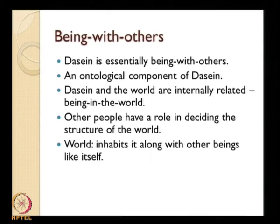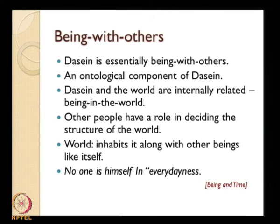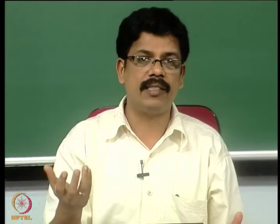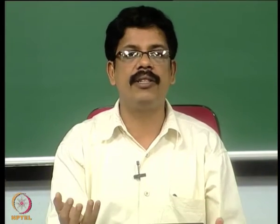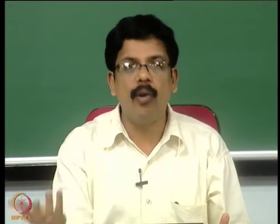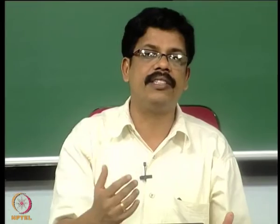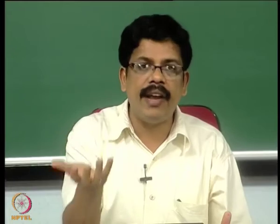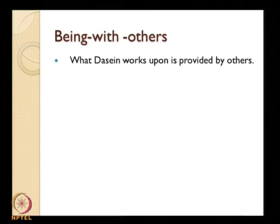Other people have a role in deciding the structure of the world, because my world is not something I myself created nor something given a priori; it is a world I too contribute to creating along with other people. There is a socio-political and cultural world where other people also participate. Heidegger says in Being and Time: 'No one is himself in everydayness,' because the world in which one finds oneself is not one's creation alone. What Dasein works upon is provided by others; others play a very crucial role in my life.